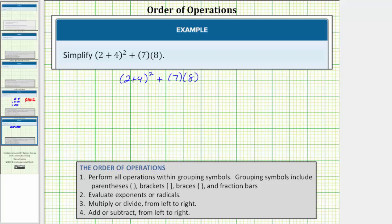So the first step is to find this sum inside the parentheses. Two plus four is equal to six. So the given expression simplifies to six squared plus seven times eight.